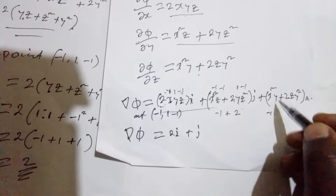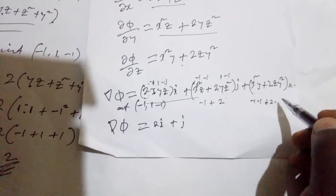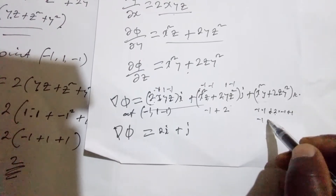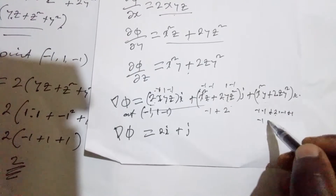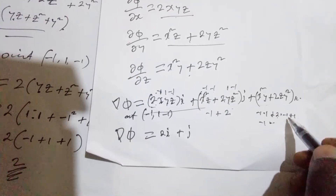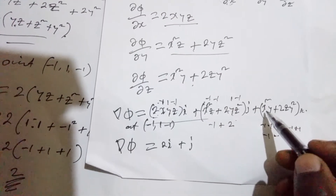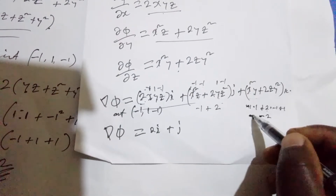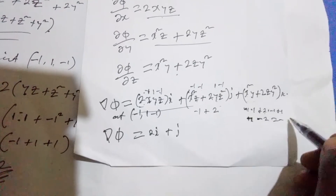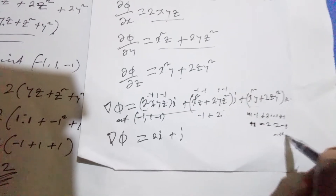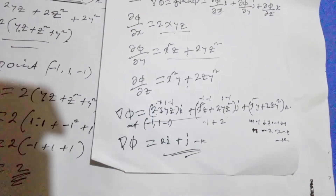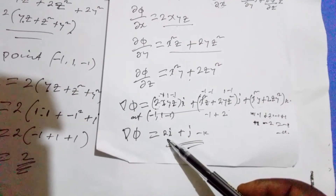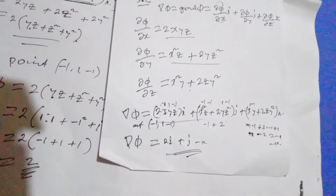Then for the k component, x squared y plus 2zy squared: negative 1 squared times 1 gives 1, then plus 2 times negative 1 times 1 squared gives negative 2. So 1 minus 2 equals negative 1, giving us negative k. So at point negative 1, positive 1, negative 1, the gradient of the function equals 2i plus j minus k. Thank you for watching and listening.